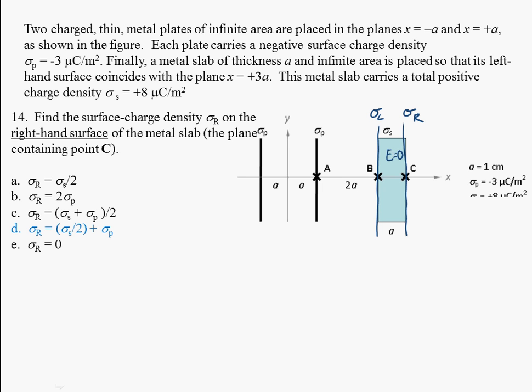So the way we're going to do that is we're going to use superposition. We know that for any one of these planes, the electric field is given by sigma over 2 epsilon naught. So all we need to worry about are the signs, which direction they're pointing. So let's go ahead and do this and use the fact that we know the electric field is zero inside at point A.